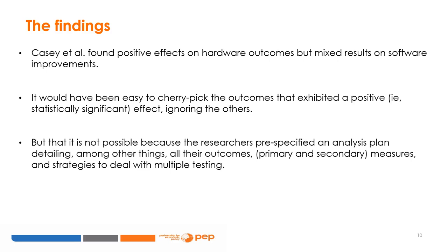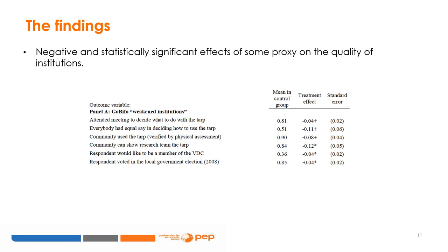But this was not possible because the researchers pre-specified an analysis plan detailing, among other things, all their outcomes — primary and secondary — measures, and strategies to deal with multiple testing. The first table shows evidence that the quality of institutions declined as a result of GOPIFO. On Line 1 of Panel A, 84% of the control group did attend the meeting to decide what to do, and the impact was a 4 percentage point increase for those in the treatment group. On Line 2, 51% in the control group reported that everyone had an equal say and the treatment negatively affected this outcome — 11 percentage points lower in the treatment group. So they are more likely to participate in community meetings but less likely to experience equal participation by everyone.